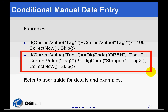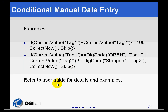In the second example, if the current value of tag number 1 is equal to the digital code of open of tag number 1, or the current value of tag number 2 is not equal to the digital code of stopped in tag number 2, then we will collect the data, otherwise we will skip it. Please refer to the user guide for more examples of the mathematical functions that are supported in more detail.